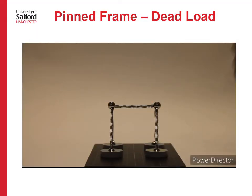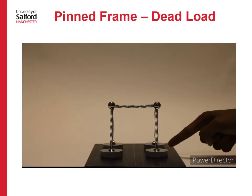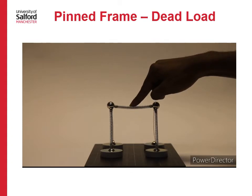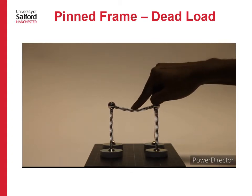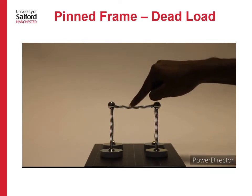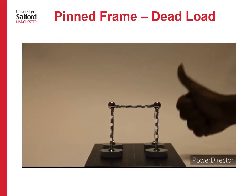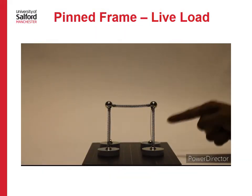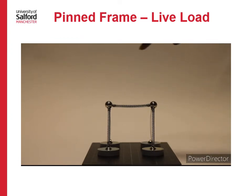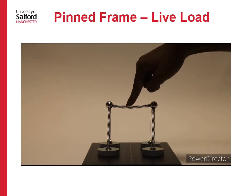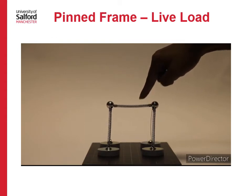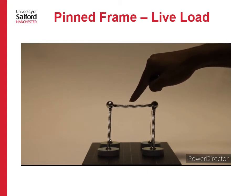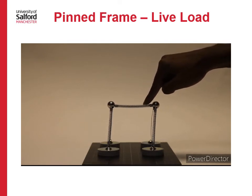Let us now see what happens when gravity loads act on a pinned frame. The joints are pinned. When a dead load is applied, you can see that the moment is not transferred from beam to column, because the joints are pinned. When a live load — another form of gravity load — is applied as a moving load, the joints allow rotation, and hence the moments are not transferred to the columns.